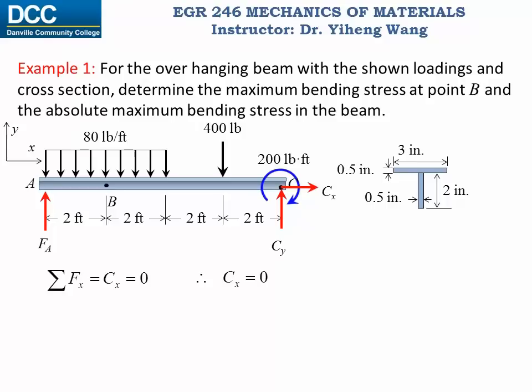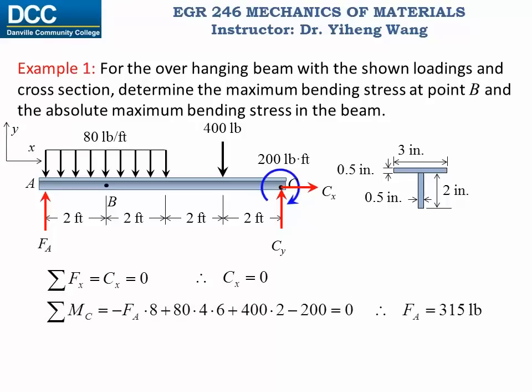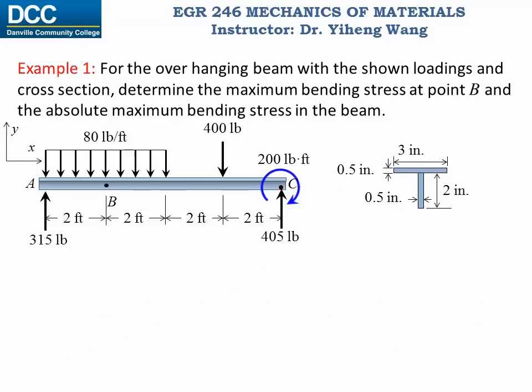If we sum the moments about point C, we can solve for FA. Then the resultant force along the y direction equals zero, so force Cy can be solved from here. We then mark the support reactions on the free body diagram, completing it.